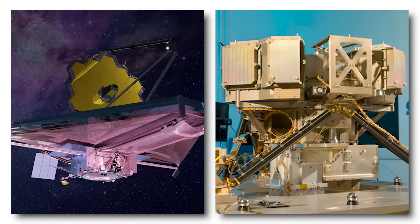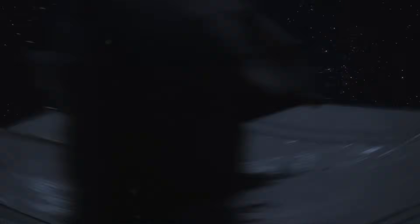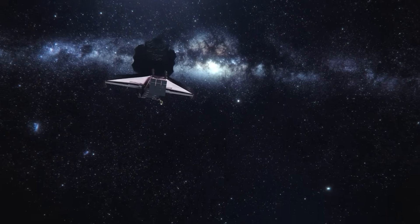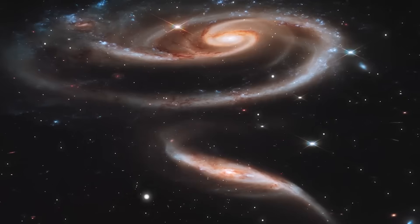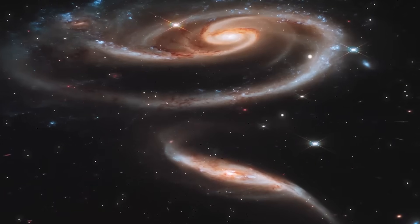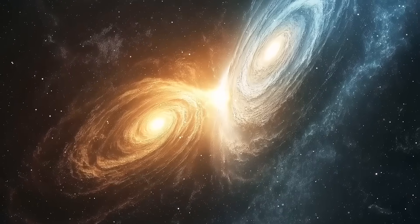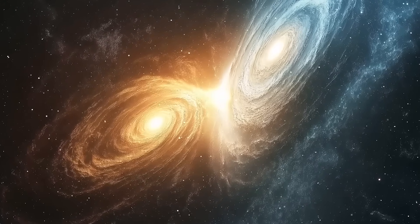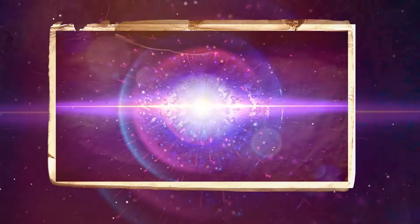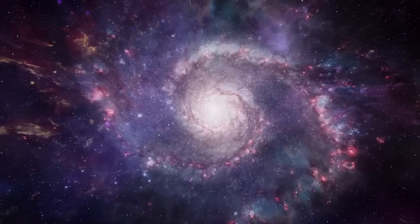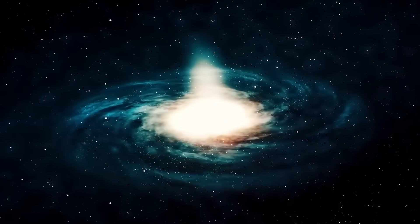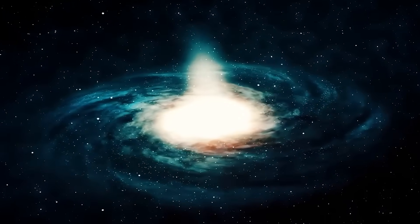Then came the data from Webb's mid-infrared instrument, MIRI, which revealed thermal signatures inconsistent with any known natural process. One galaxy in particular exhibited a controlled cooling pattern across its periphery, a phenomenon eerily reminiscent of thermal regulation on a macro scale. There was no starburst activity or supernova event to explain the heat distribution. The entire galactic body seemed to pulse, not chaotically, but rhythmically, as though being modulated.